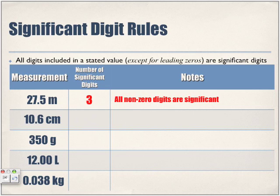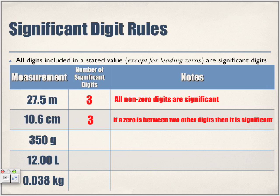With that rule in mind, we can also say that zeros in between non-zero numbers are considered significant. If a zero is between two other digits, then it is considered significant.